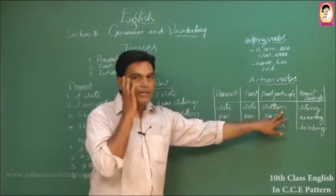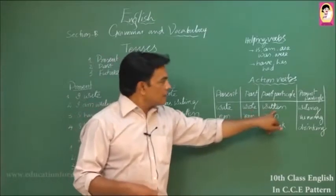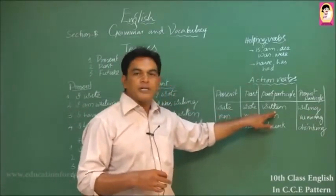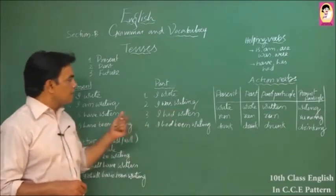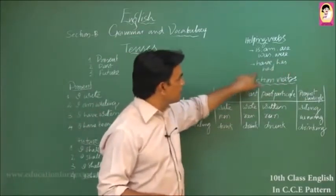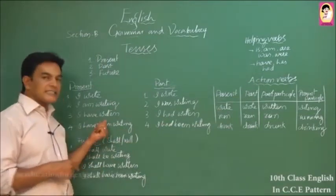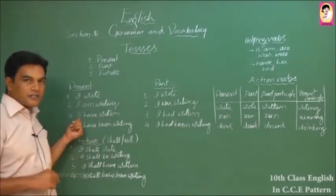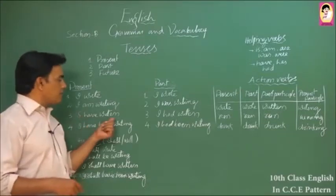We used V1 for present simple and V2 for past simple. Now, where do we use V3, the past participle? We use it with the helping verbs have, has, or had to create the perfect tense across all three major tenses. For example, 'written' is the V3 of write. Since 'I' takes 'have,' we say 'I have written' — that becomes the present perfect.